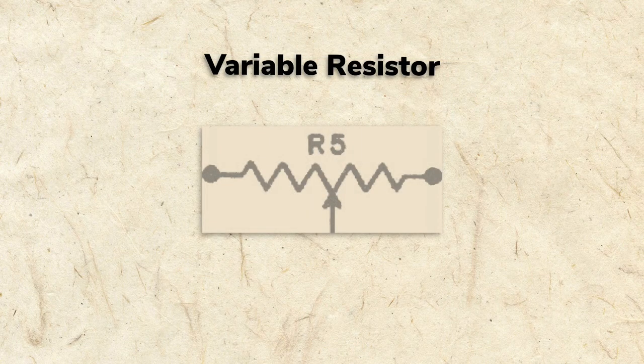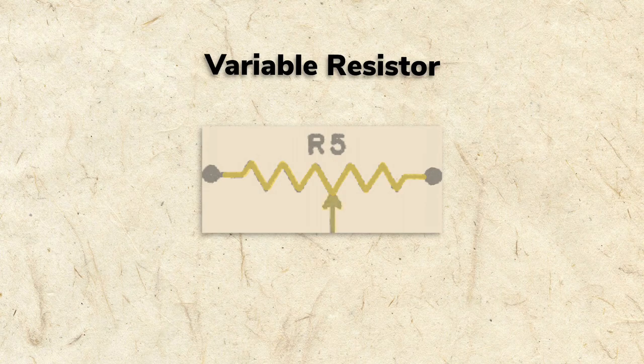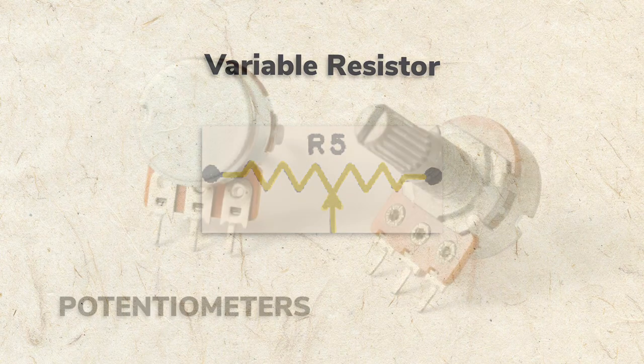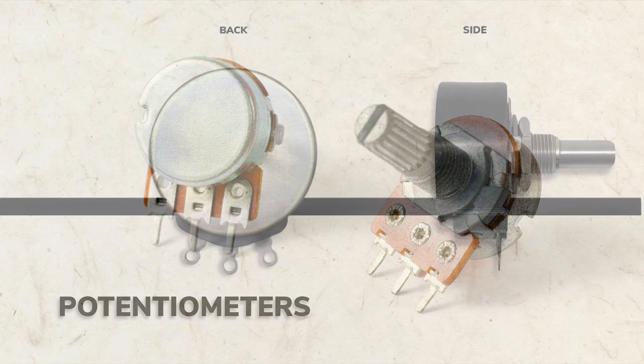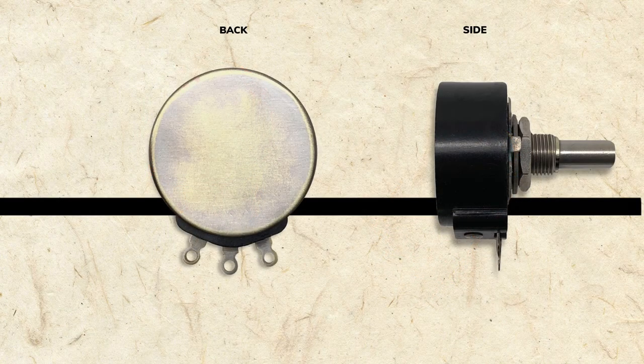The volume control is called a variable resistor because it's a resistor with variable resistance. Nowadays, variable resistors are commonly known as potentiometers. Let's take a closer look at one to see how they work.